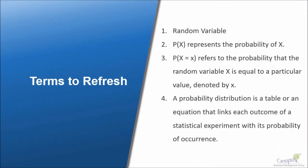Terms to refresh. Random variable. In statistics, anything that can take different values is called a random variable. In simple words, any parameter that you are trying to measure and do statistical analysis can be considered as a random variable.